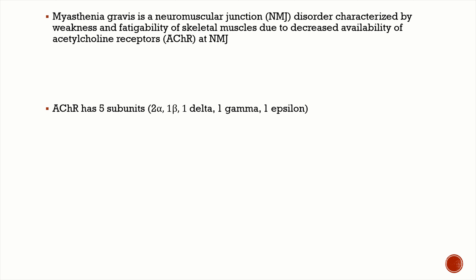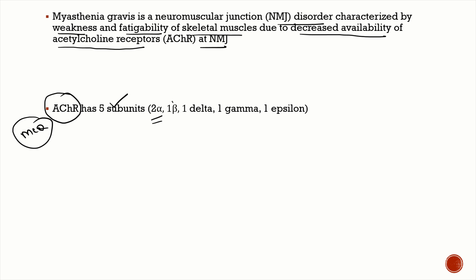Myasthenia gravis is a neuromuscular junction disorder characterized by fluctuating weakness and fatigability of the skeletal muscles due to reduced availability of acetylcholine receptors at the neuromuscular junction. The acetylcholine receptor has five subunits: two alpha, one beta, one delta, one gamma, and one epsilon. Acetylcholine binds at the alpha subunit — that's an important exam point.